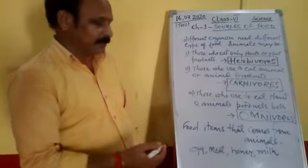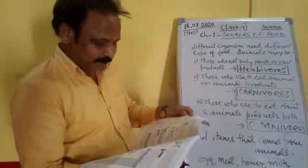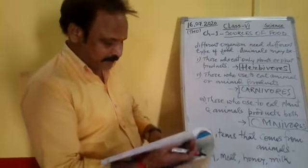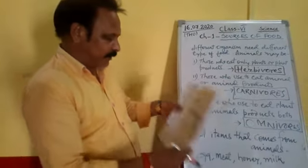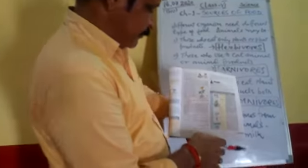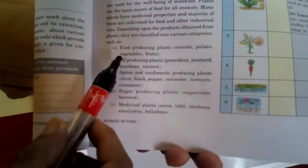Whereas, many food items come from plants as written in your book. Food producing plants include cereals, pulses, vegetables, and fruits.